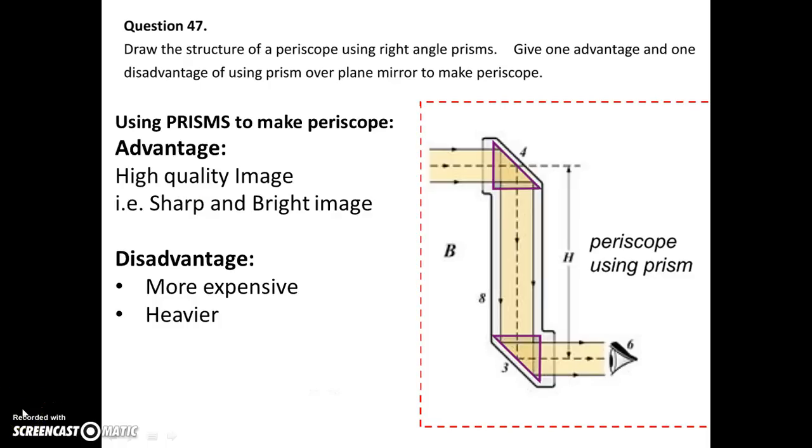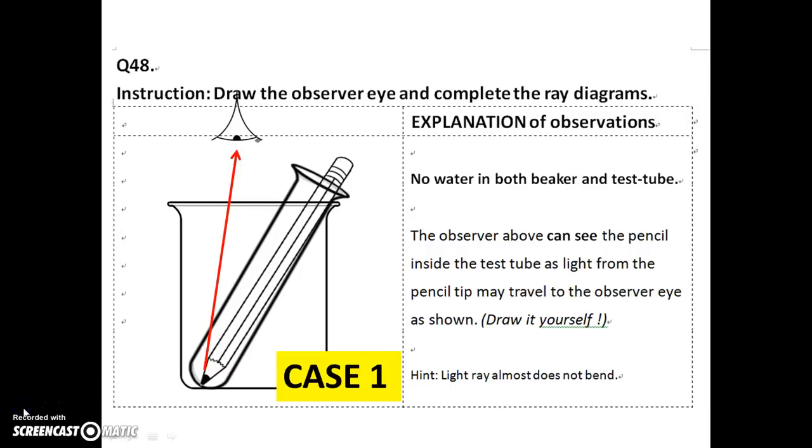And then question 48, there are three cases, this is case 1, without any water in both beaker or test tube. In that case, then the light from the tip of the pencil may just go straight into the eye, almost without deflecting.